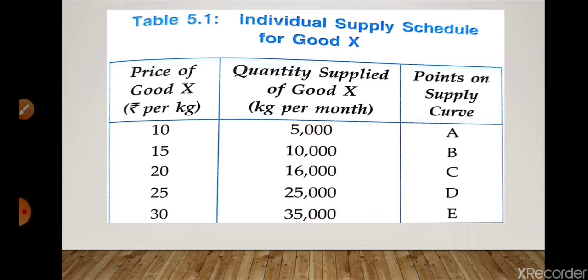We have taken quantity of commodity X per kg per month and price per kg. The various prices are 10, 15, 20, 25, and 30, and the corresponding quantities are 5,000, 10,000, 16,000, 25,000, and 35,000. These correspond to points on the supply curve. The relationship between price and quantity at various prices shown in tabular form is known as the supply schedule.